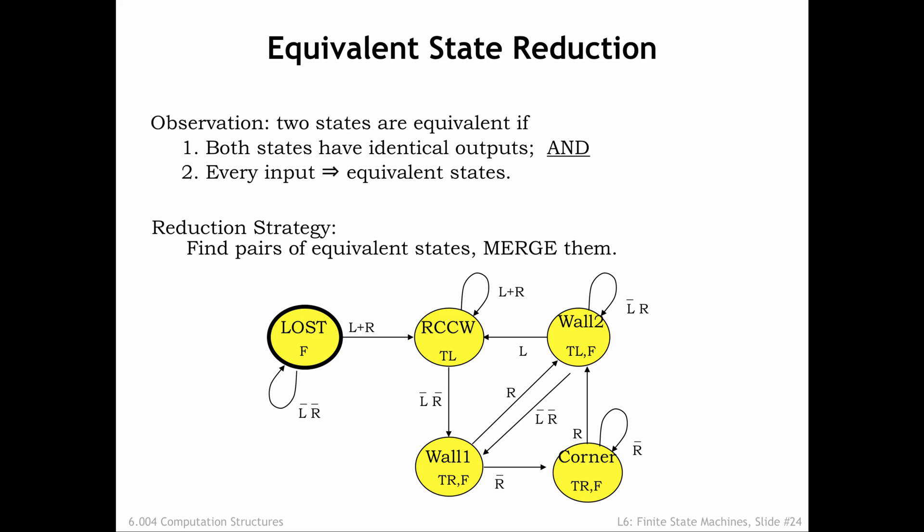Let's try this on our ant FSM. First, we need to find a pair of states that have the same outputs. There's only one such pair: wall 1 and corner, both of which assert the turn right and forward outputs. Let's assume that wall 1 and corner are equivalent and ask if they transition to equivalent states for each applicable combination of input values. For these two states, all the transitions depend only on the value of the R input, so we just have to check two cases. If R is 0, both states transition to corner. If R is 1, both states transition to wall 2. So both equivalence criteria are satisfied and we can conclude that the wall 1 and corner states are equivalent and can be merged.